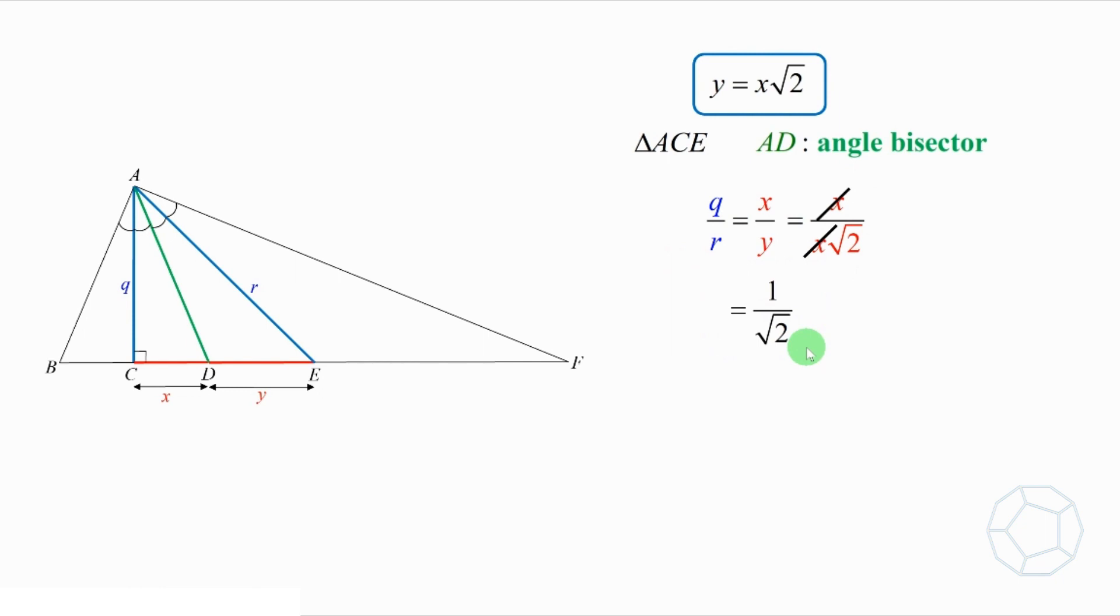Still, it's about the lengths. However, let's look at the figure carefully. ACE is a right-angle triangle. Q is the adjacent side, and R is the hypotenuse. Therefore, Q over R equals cosine 2 theta. That's how we change from sides to angles using trigonometry.